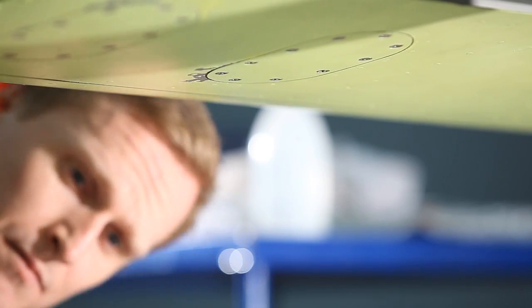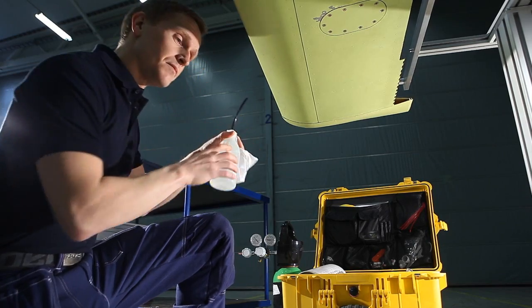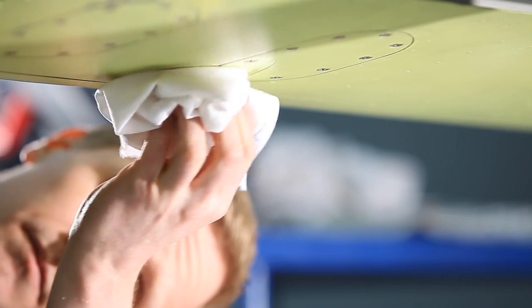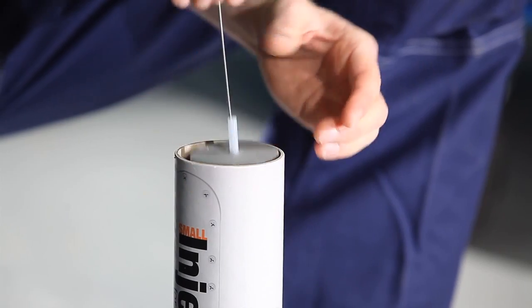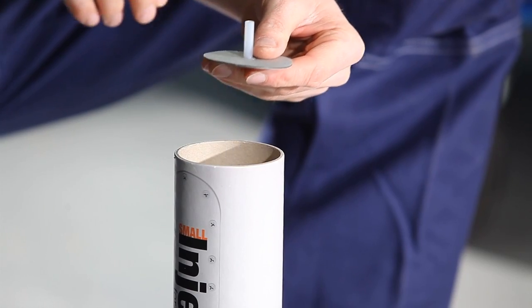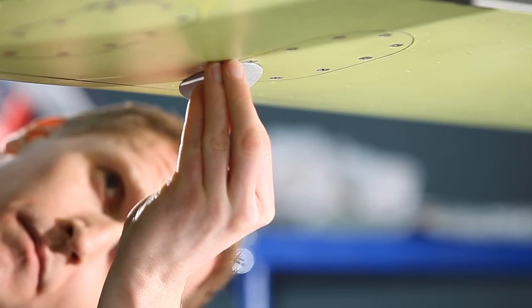Before we use our tracer gas to find the source of the leak, we must do some preparations. First, we locate the exit point by simply observing fuel spots or drops on the outside of the skin. Then, we fix an injection pad over the exit point, which will later allow us to connect the gas injection kit.